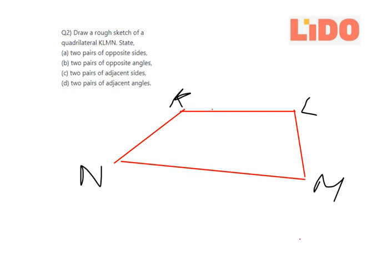Let's move on to the second question. The second is two pairs of opposite angles. So the two opposite angles are angle, first one is angle... I'll use another color. Yeah, so the first one is angle NKL and angle NML.